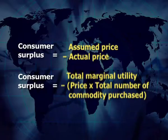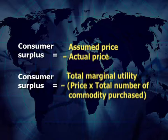Consumer surplus is the difference between what a consumer is willing to pay for his or her preferred goods and what he actually pays. Consumer surplus equals assumed price minus actual price, or we can say consumer surplus equals total marginal utility minus price multiplied by the total number of commodities purchased.